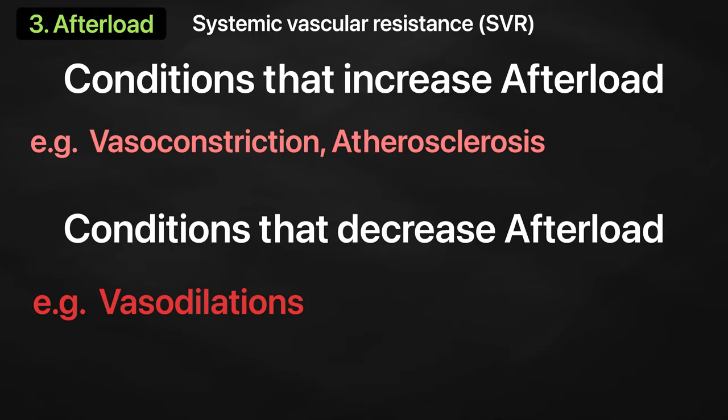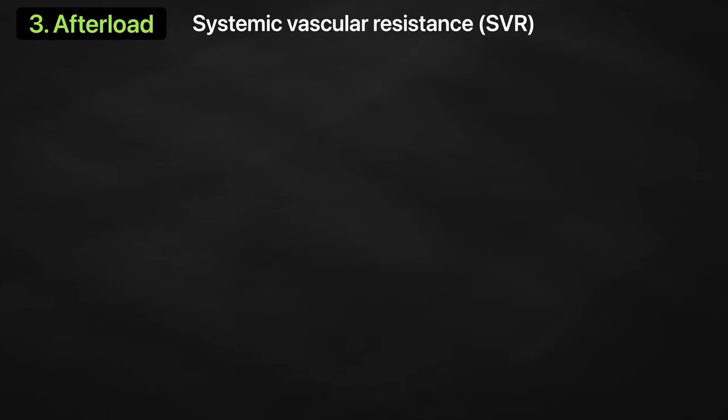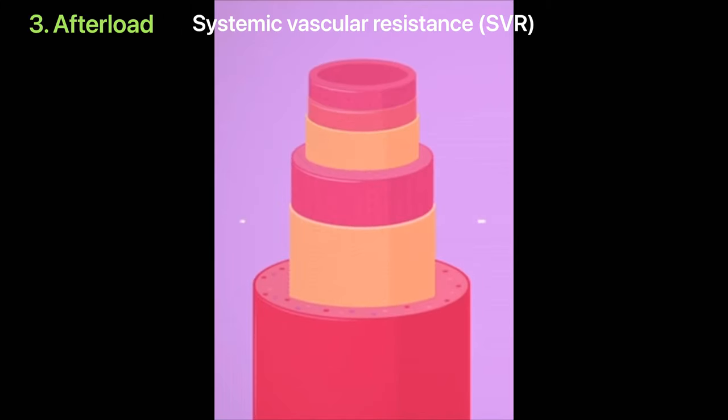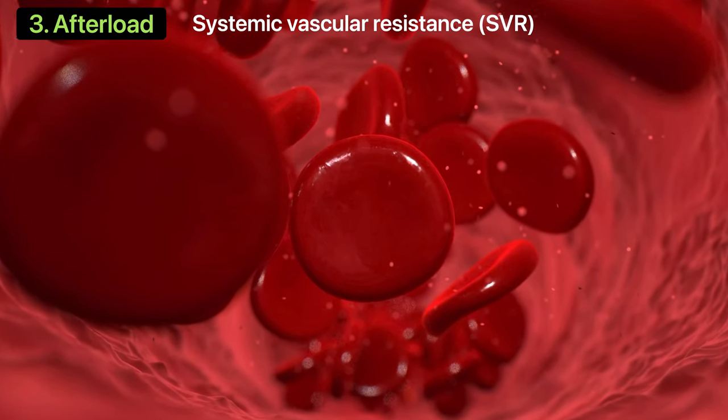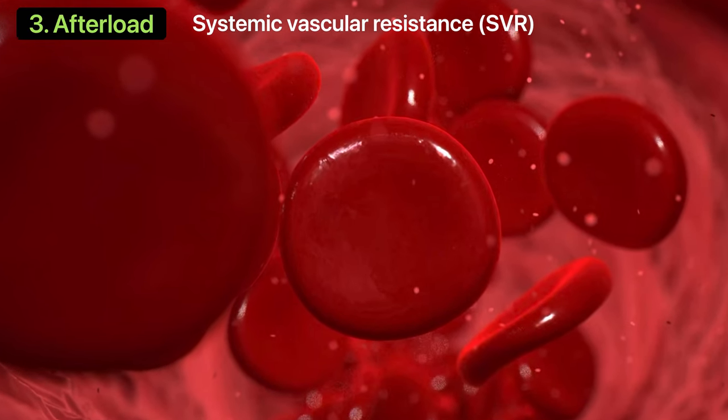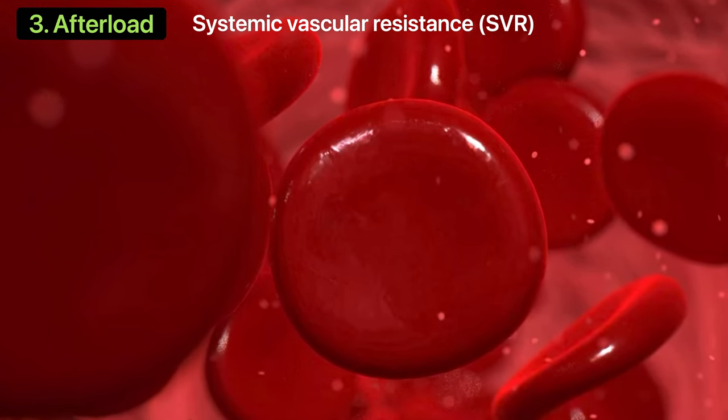Afterload, also known as systemic vascular resistance, SVR. Mechanisms that cause vasoconstriction increase SVR, and those mechanisms that cause vasodilation decrease SVR. Although systemic vascular resistance is primarily determined by changes in blood vessel diameters, changes in blood viscosity also affect SVR.